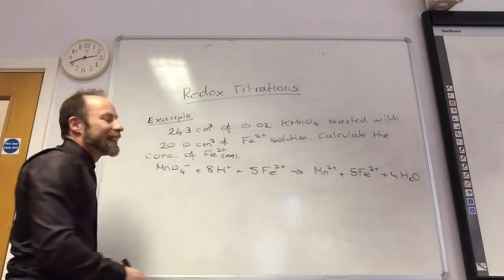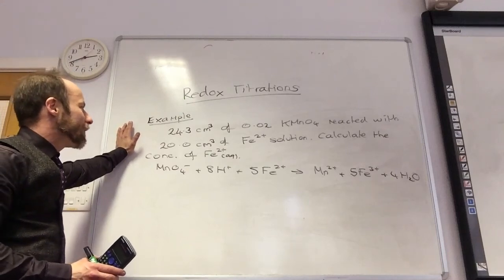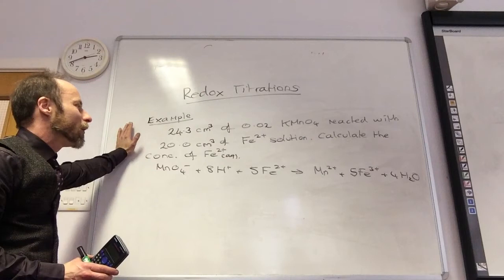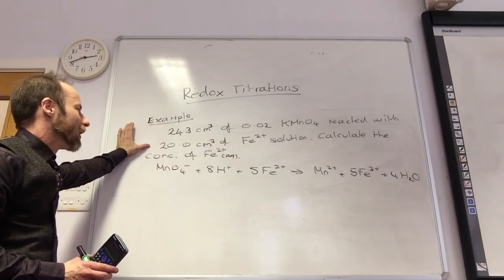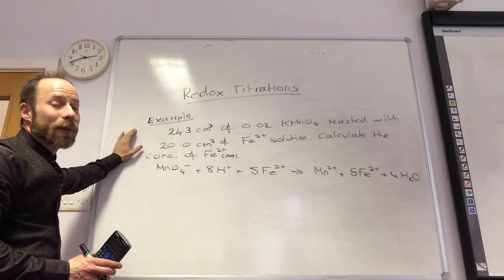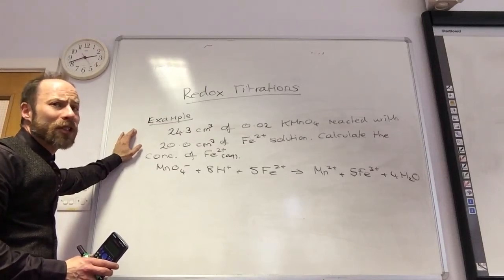So this is an example, this is the simplest example you're ever going to get. So 24 centimetres cubed of 0.02 KMnO4 reacted with 20 centimetres cubed of Fe2 plus solution. Calculate the concentration of Fe2 plus. It's not going to be this easy for the exam, I'll tell you that. But where do we start? Titration. Brilliant.